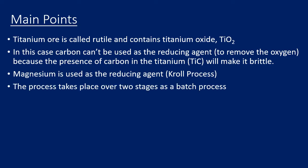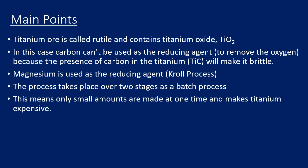It takes place over two stages, so it's classed as a batch process, not continuous. This means that only small amounts are made at any one time, and that's why titanium is expensive.